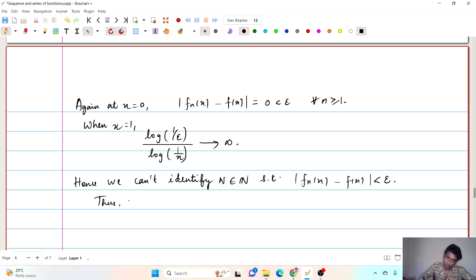Okay. Thus, we just proved fn(x) converges uniformly on [0,k] closed interval [0,k] where k is less than 1 and is point-wise on [0,1]. Okay. In the upcoming lecture also, we will discuss few more problems on this convergence of sequences.